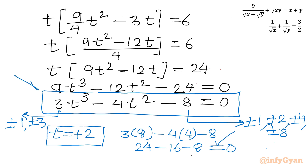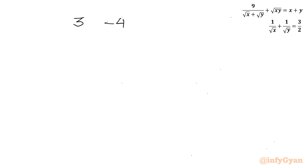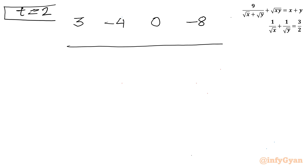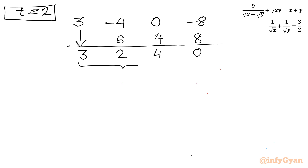I will now perform synthetic division to find the remaining factors. The coefficients of the cubic are 3, −4, 0, −8 and the known root is t = 2. Bringing down 3, then 3×2 = 6, −4+6 = 2, 2×2 = 4, 0+4 = 4, 4×2 = 8, −8+8 = 0. The remaining quadratic factor has coefficients 3, 2, 4.